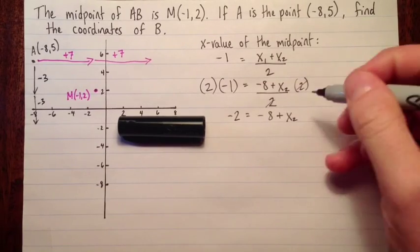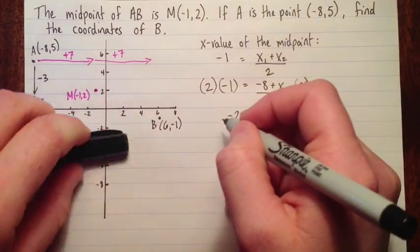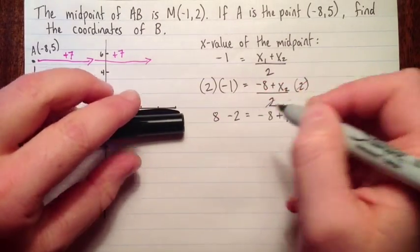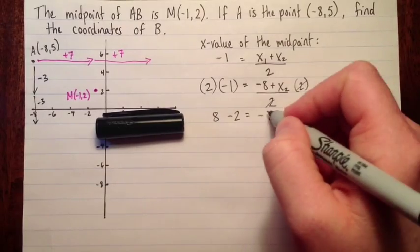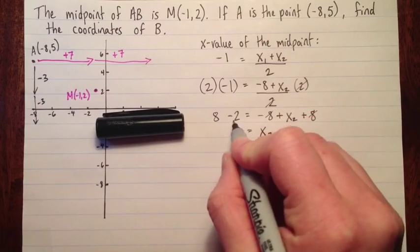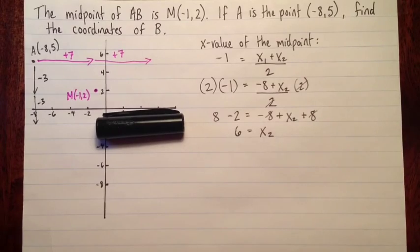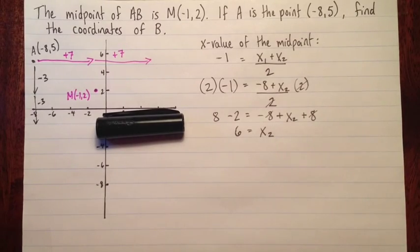And I'd like to get rid of the negative 8, so I'll add 8. So we have 8 subtract 2 over here. So this simplifies. And now we have x2 equals 8 subtract 2, which is 6. That's perfect. That's what we had before, too.